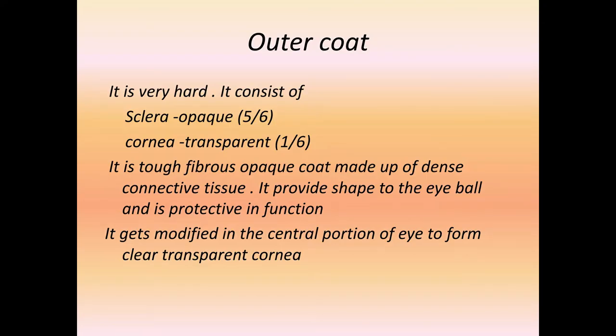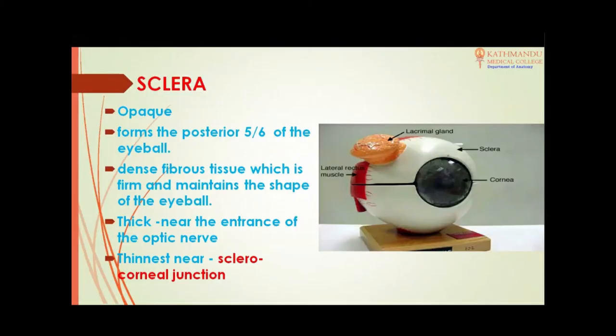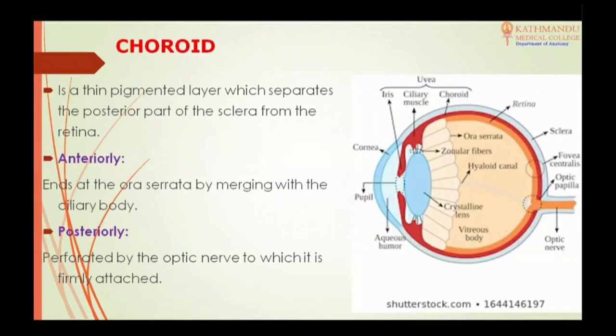Coming to the outer layer, it is very hard and divided into two parts: posteriorly the sclera and anteriorly the cornea. The cornea is transparent and takes one sixth part of the outer layer. The sclera is opaque and consists of five sixths of the outer layer.